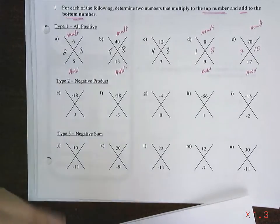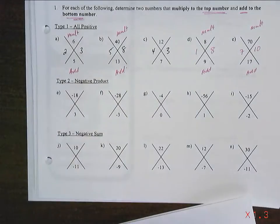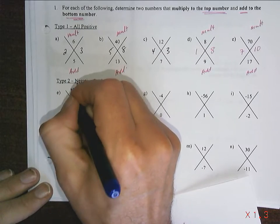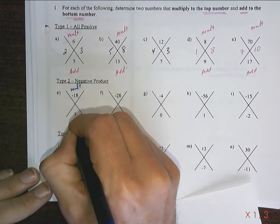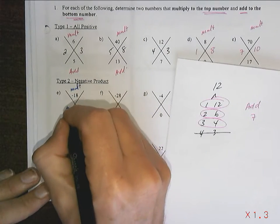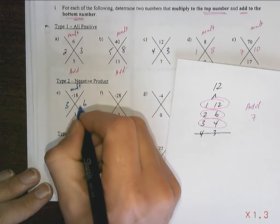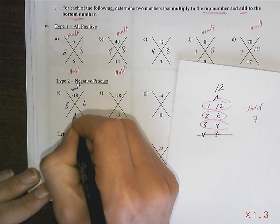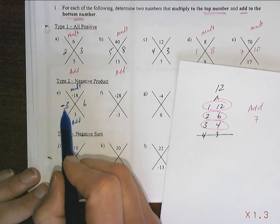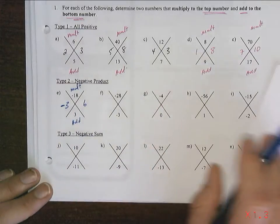Now, all that's left is to do variations on a theme. This line, we're going to do some that have a negative product. We want it to multiply to give negative 18, but add to give a positive 3. So, now we've got to be worried about sign. This is 3 and 6. One of them needs to be negative. It must be negative 3. Negative 3 times 6 is negative 18. Negative 3 plus 6 is positive 3.